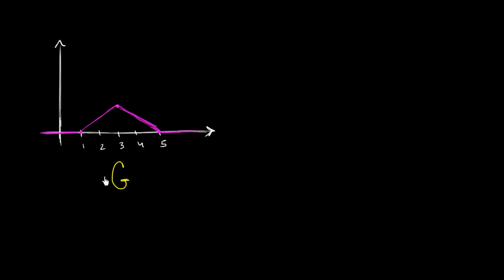So g is a continuous random variable, and here is its probability density function. And I like this one because this is non-uniform.